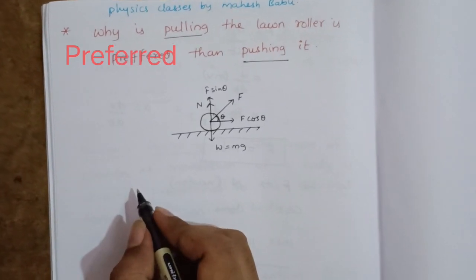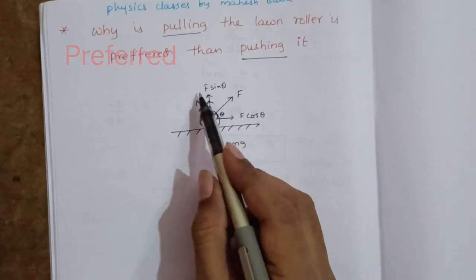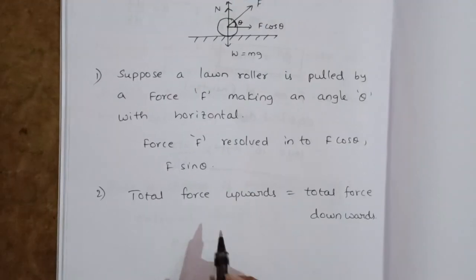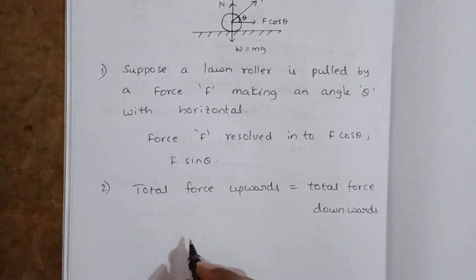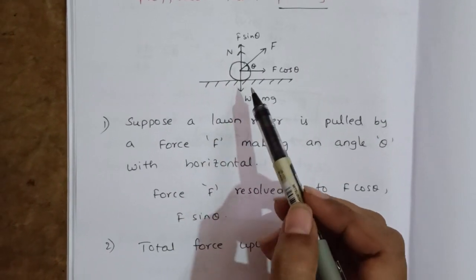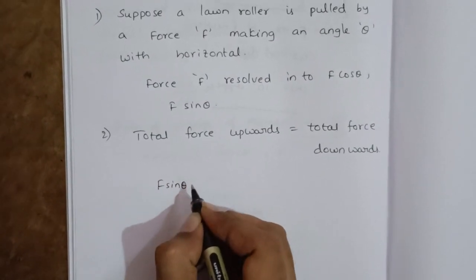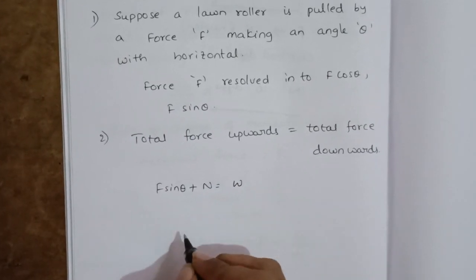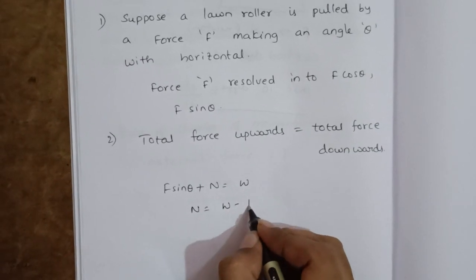The total force acting upward equals the total force acting downward. The upward force is F sin theta plus N, and the downward force is W. So we can write: F sin theta + N = W, which gives N = W − F sin theta.